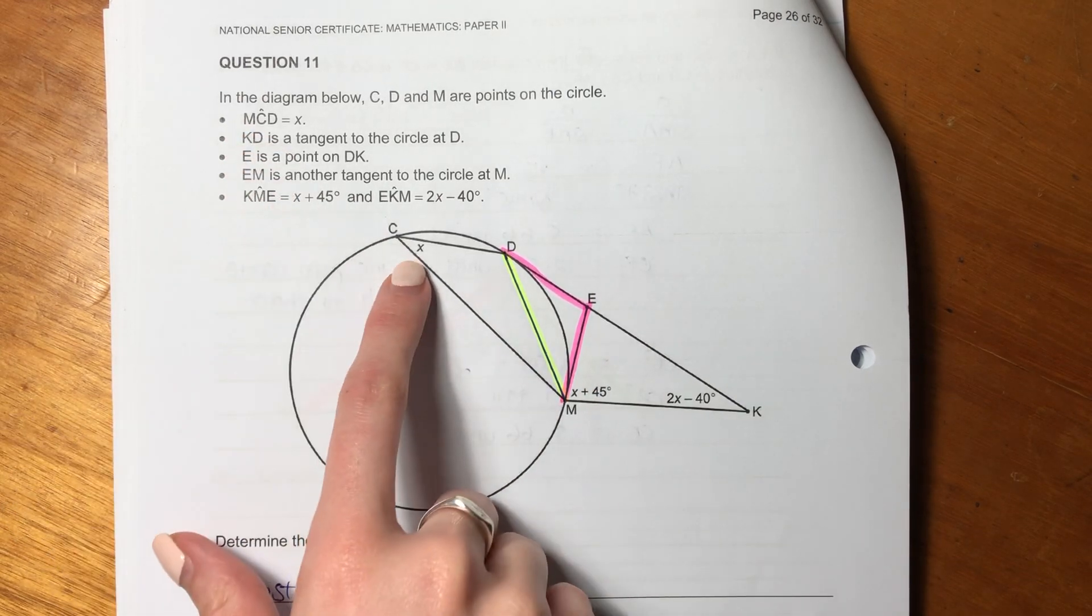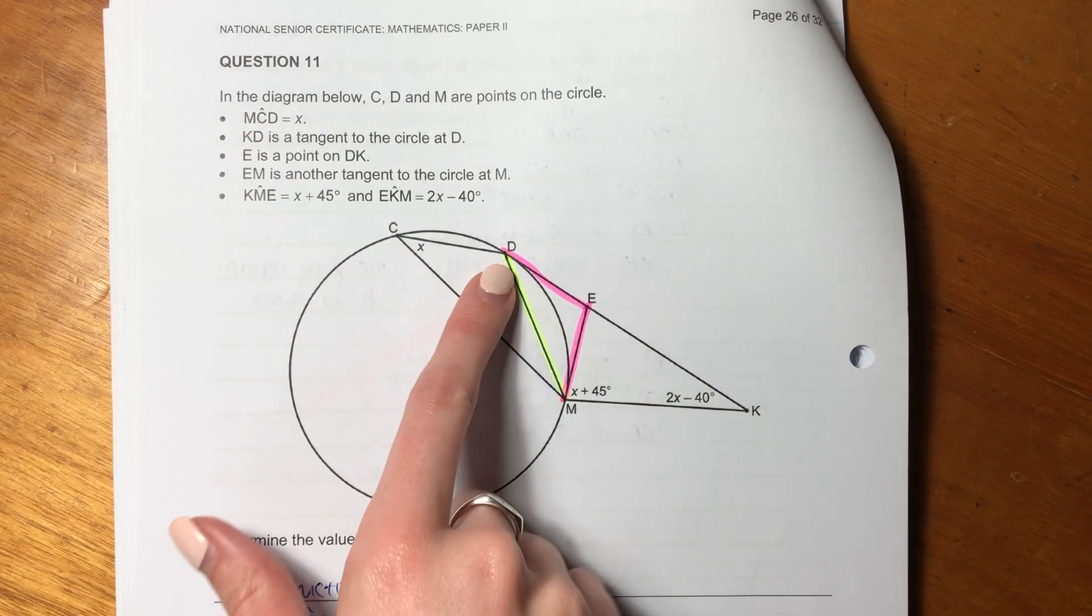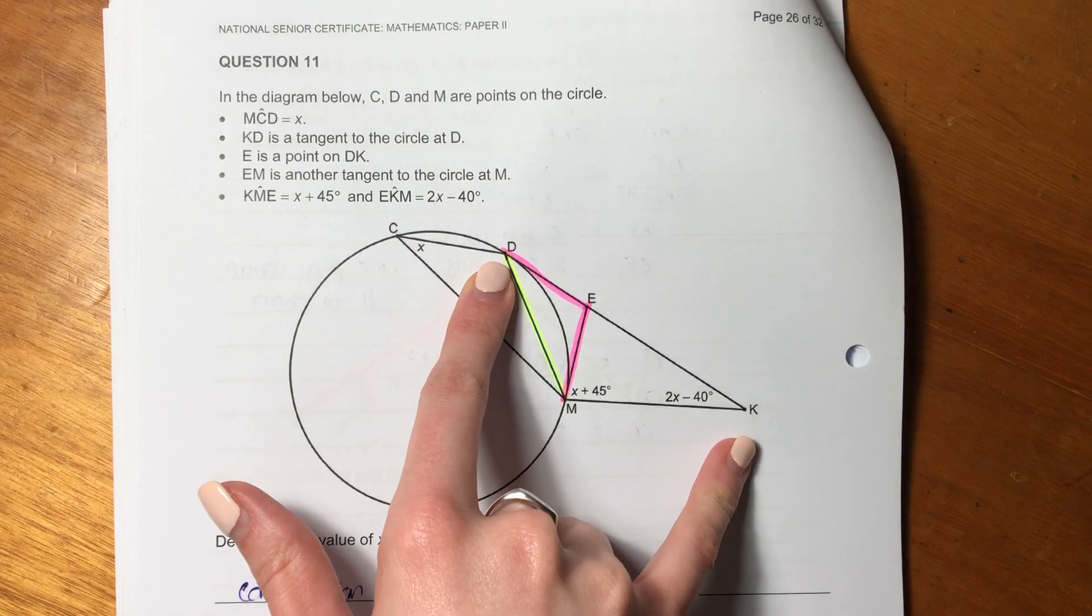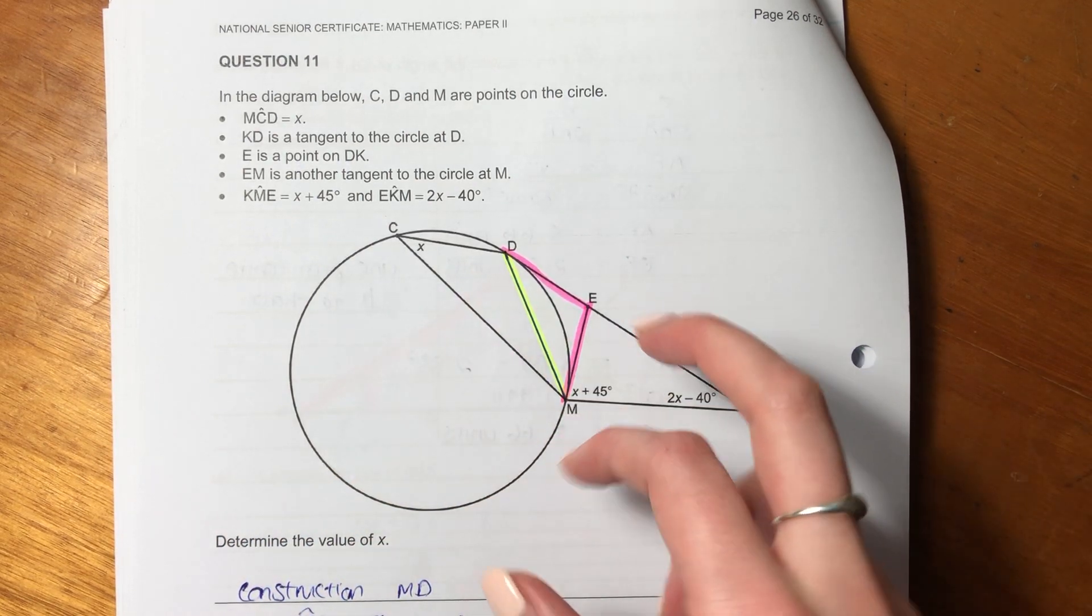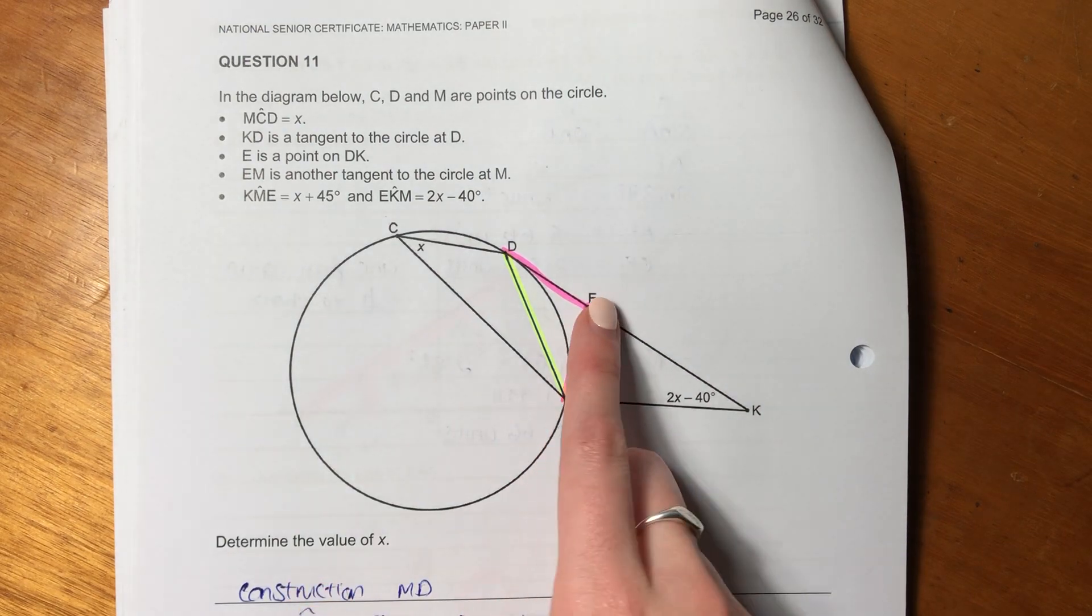So it says angle MCD is X. KD is a tangent to the circle at D. And then it says E is a point on DK. EM is another tangent.